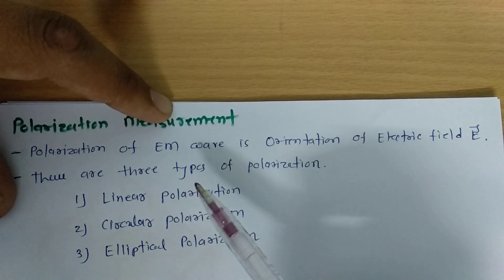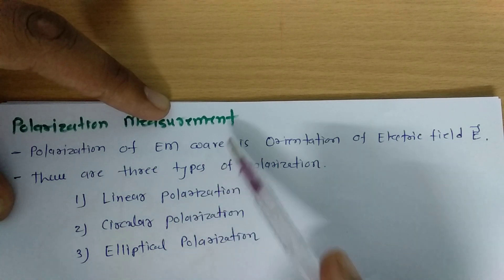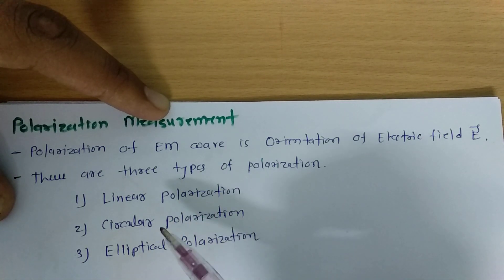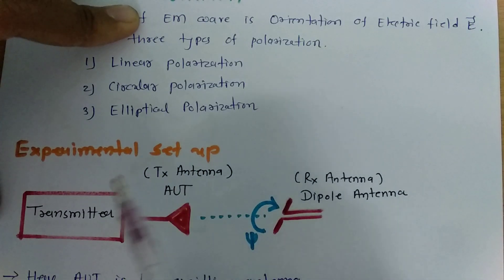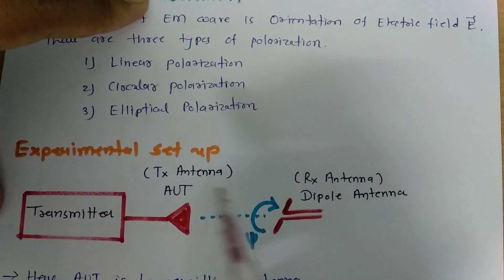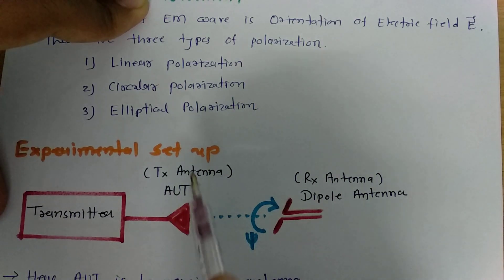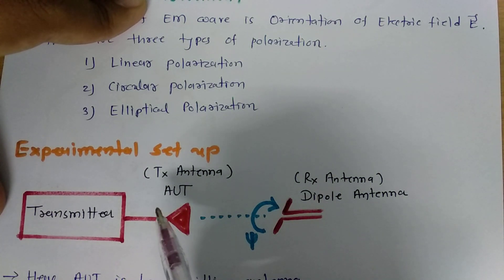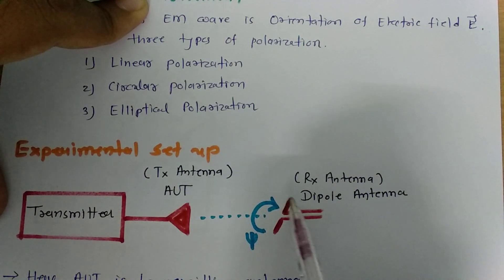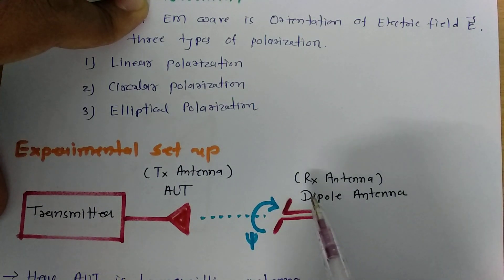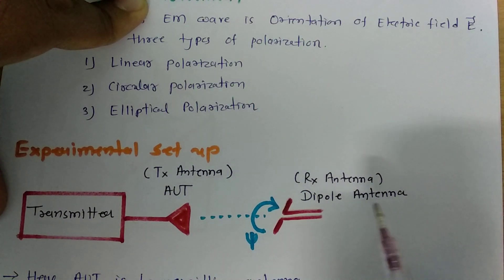By measuring polarization we can justify what kind of signal is being sent from the antenna. I have shown one experimental setup to measure polarization. Here we have the transmitting antenna, which is the antenna under test (AUT), and its position is fixed. We also have a receiving antenna, which should be a linearly polarized antenna. A dipole is a linearly polarized antenna, so I have kept a dipole antenna as the receiving antenna.